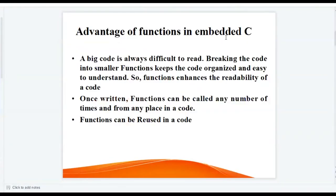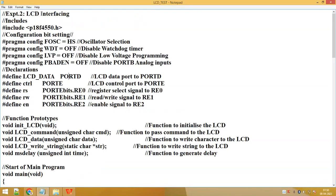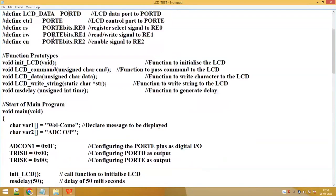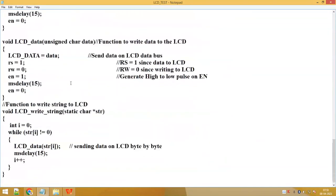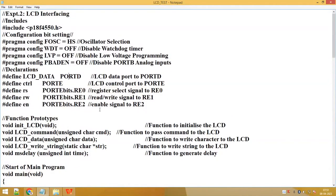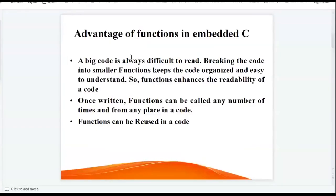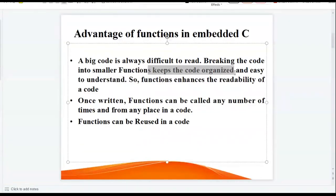One advantage of functions in embedded C is that a big code is always difficult to read. For example, this is a program for LCD interfacing — if you look at the length of this program, it consists of around 30 to 35 instructions. Now there are codes which consist of thousands and thousands of lines, so such big codes are always difficult to read. Breaking the code into smaller functions keeps the code organized and easy to understand, so functions enhance the readability of code.